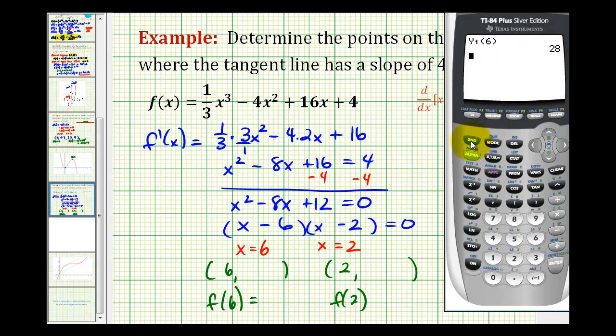And we'll do the same for x equals two. Again, we'll press vars, right arrow once, enter, enter, and then in parentheses, enter two. This one doesn't come out so nice. Point six repeating is equal to two thirds, but if we didn't recognize that, we could press math, enter, enter, and it will convert the decimal to an improper fraction.